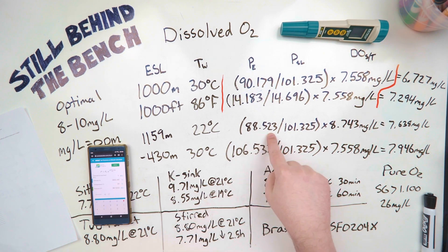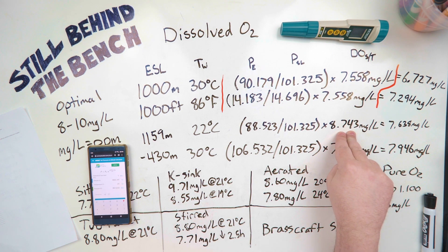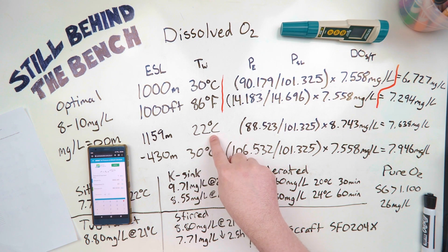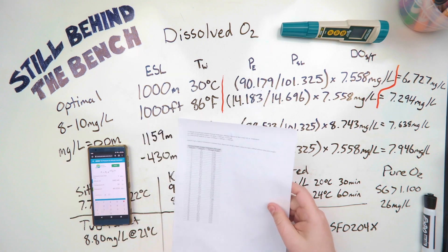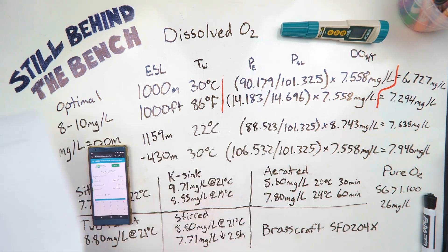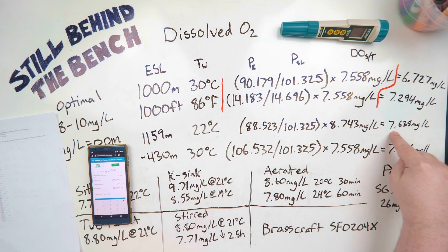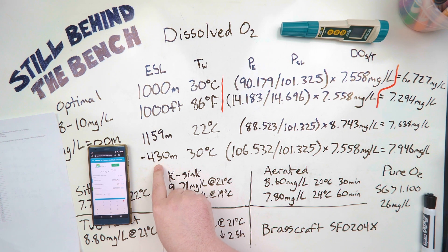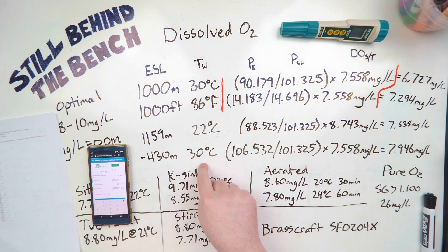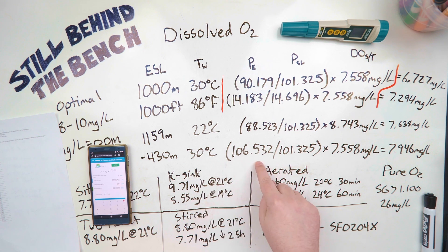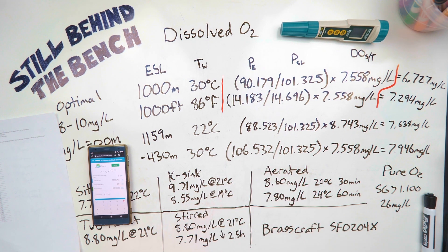88.523 kilopascals divided by the sea level pressure times the amount of dissolved oxygen at sea level with a 22 degree wash. So in this case, 22 degrees, 8.743. So that means if I have a bucket of water in my condo and it's 22 degrees in that bucket and the air temperature is 20 degrees, then there'll be roughly 7.638 milligrams per liter or ppm. If I then suddenly moved to the Dead Sea in Israel and my wash was now 30 degrees, since it's below sea level, the number is going to go up, since there's more air pressure.